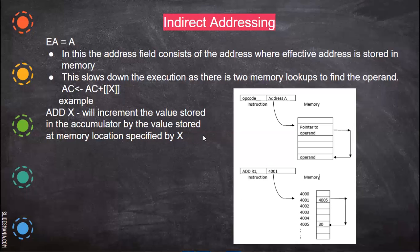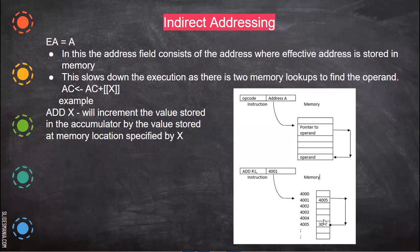In direct addressing, when the address is given here itself, you go to that address and the data is present there directly. But in indirect addressing, what is stored at the first address is not actually data — again, it is a memory location where you have to go to that particular memory location to get the data.